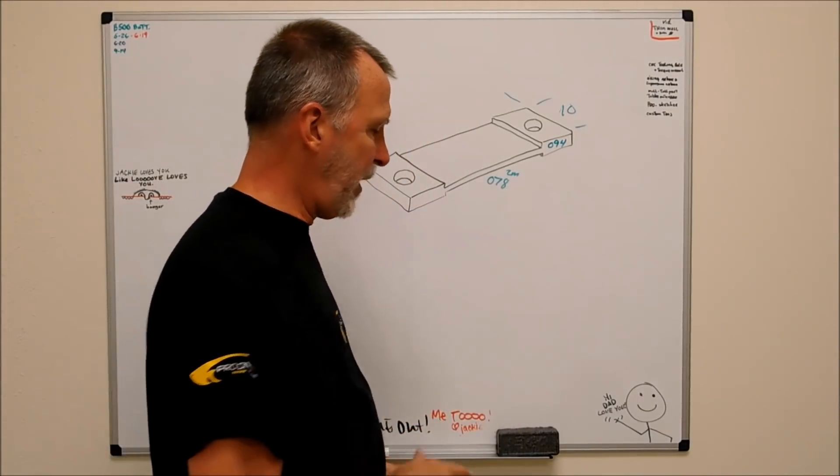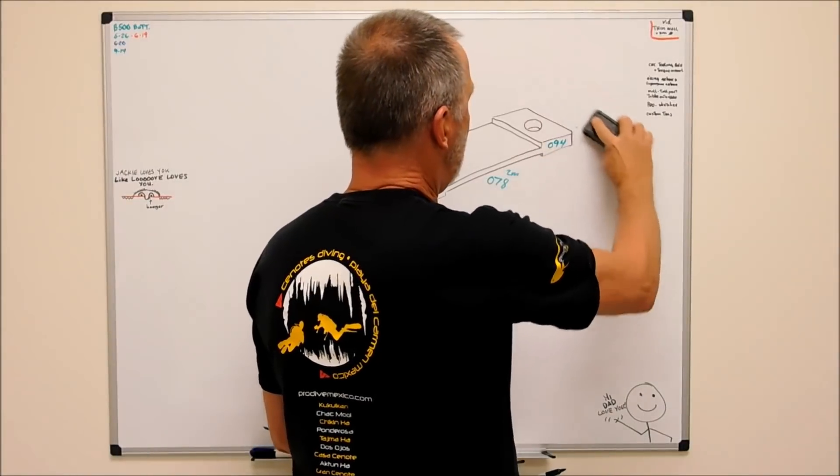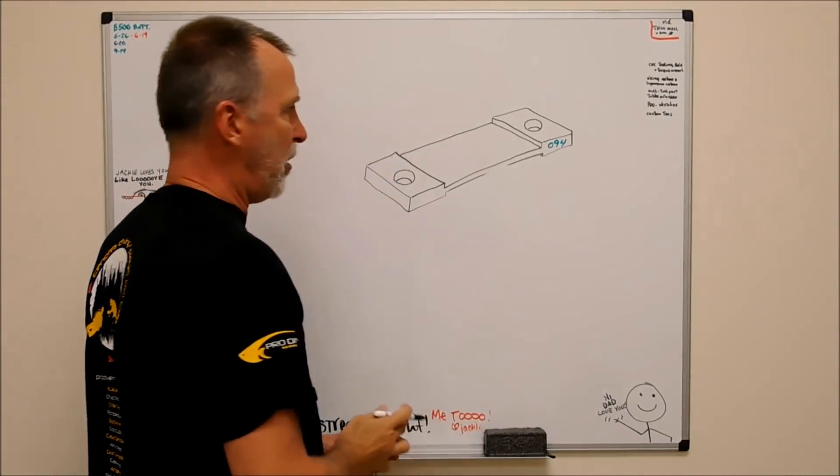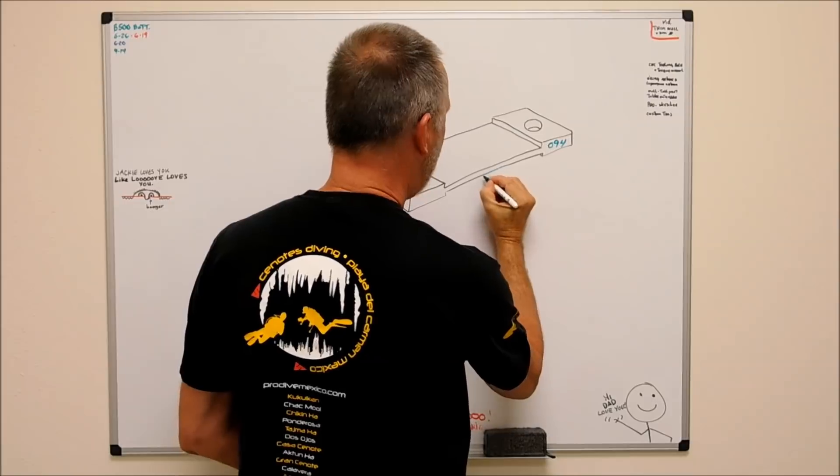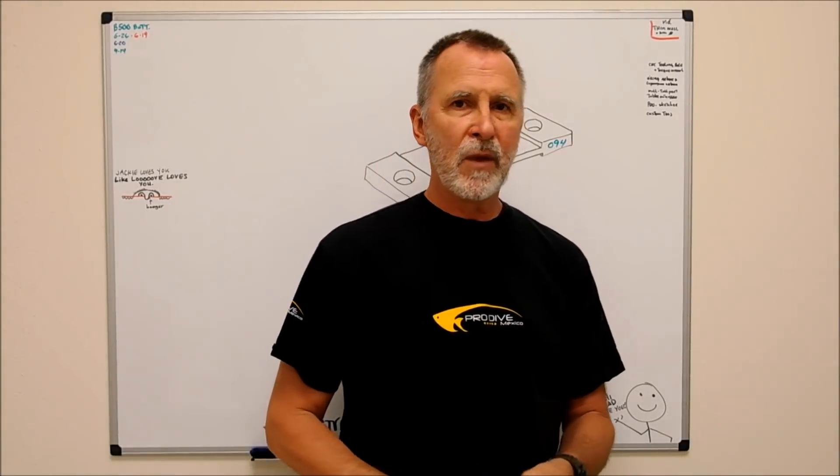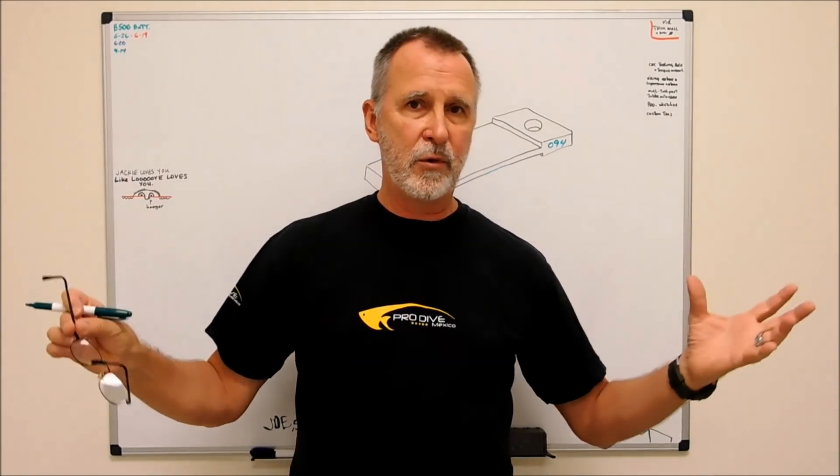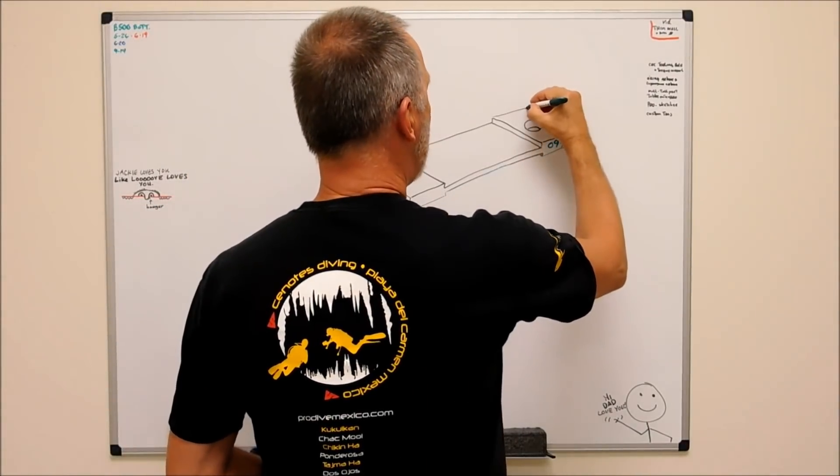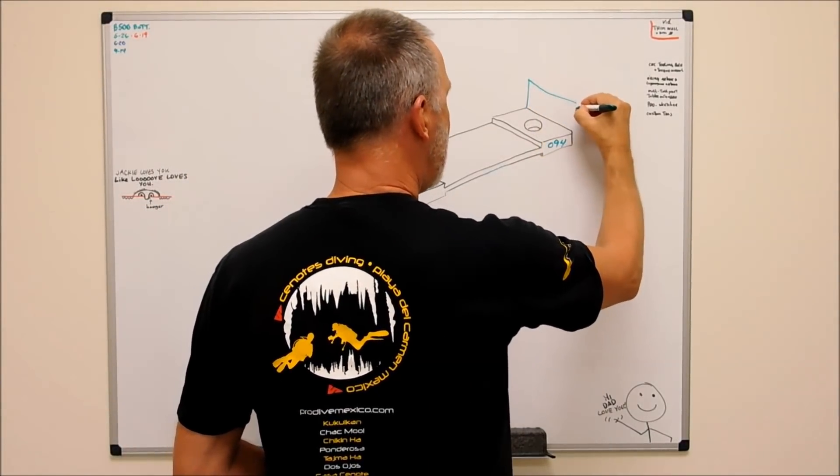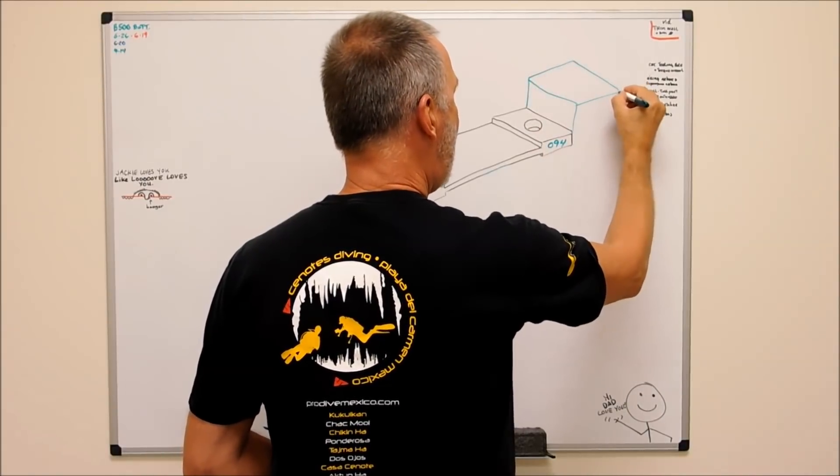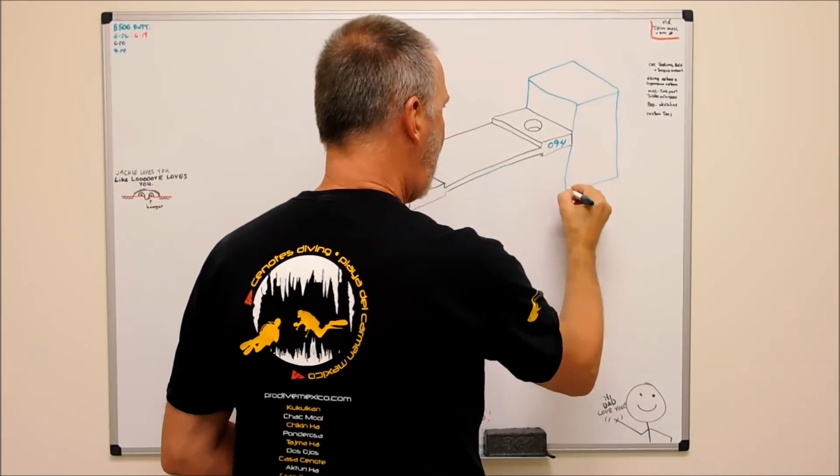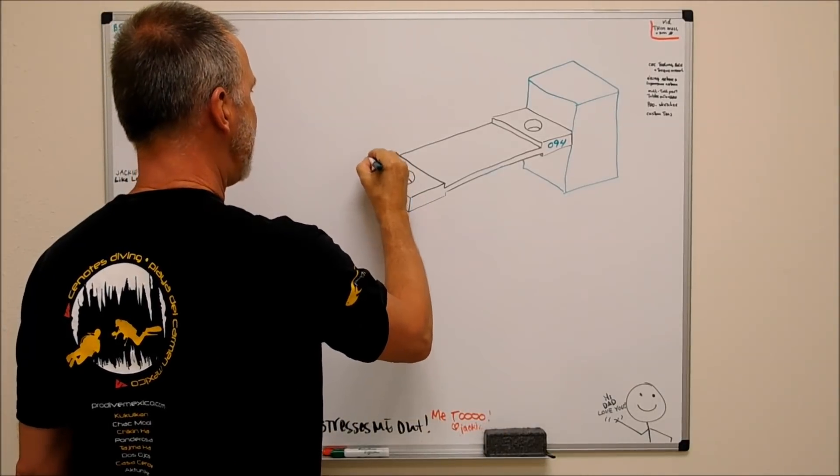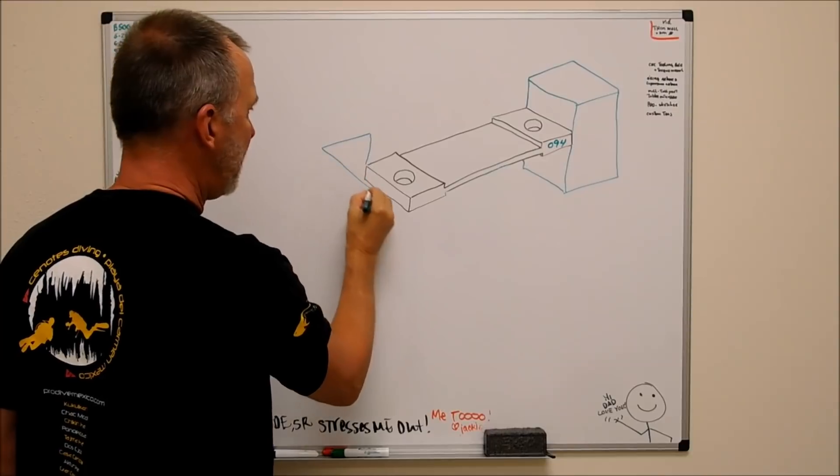So I'm going to do what is called, or what I call, a dog bone approach on this part. Now dog bone approach in my world, in my mind, is when you support a part that you're working on with grip stock, but symmetrical grip stock about the ends of the part. So now the part is going to look like this. And you can see why I call it a dog bone because it's exactly what it looks like when you get to the end of the day.